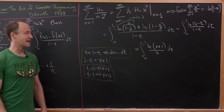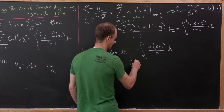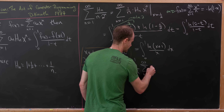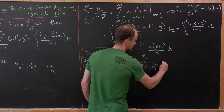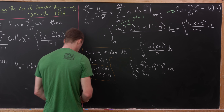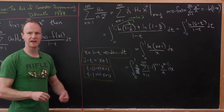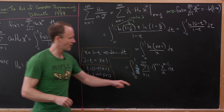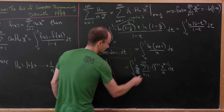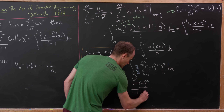We expand the natural log of (x plus 1) as its well-known power series, giving the integral from 0 to 1 of (1/x) times the sum as n goes from 1 to infinity of (-1)^(n+1) times x^n over n, dx. Taking the 1/x inside reduces the exponent to n-1, and integrating gives x^n over n — but we already have an n in the denominator, building n² in the denominator. Evaluating from 0 to 1 gives 1/n², with the alternating sign attached.